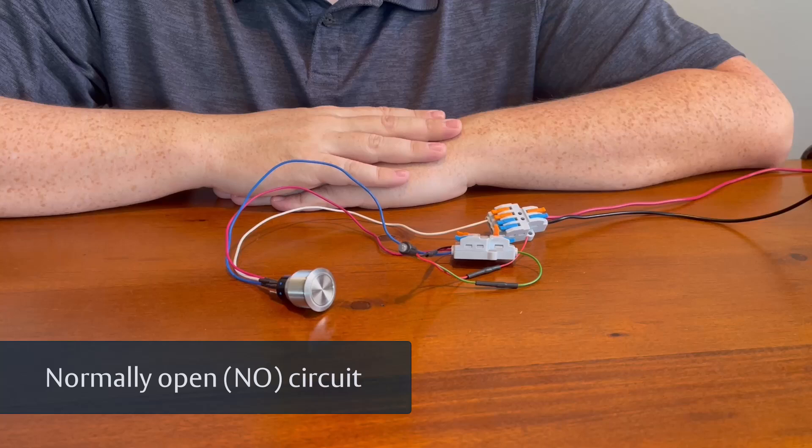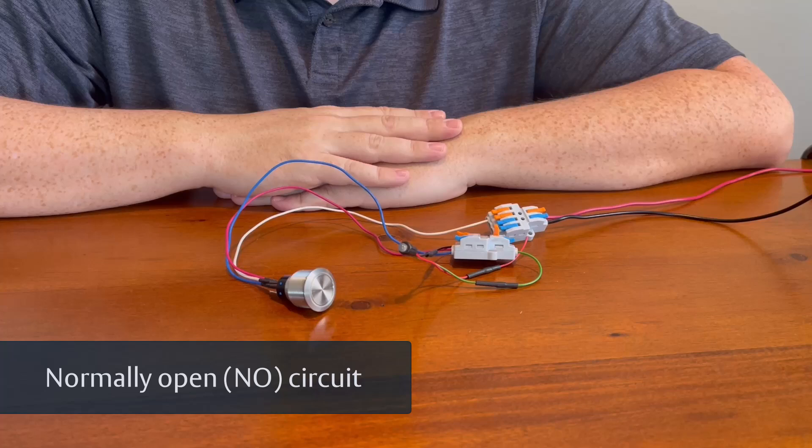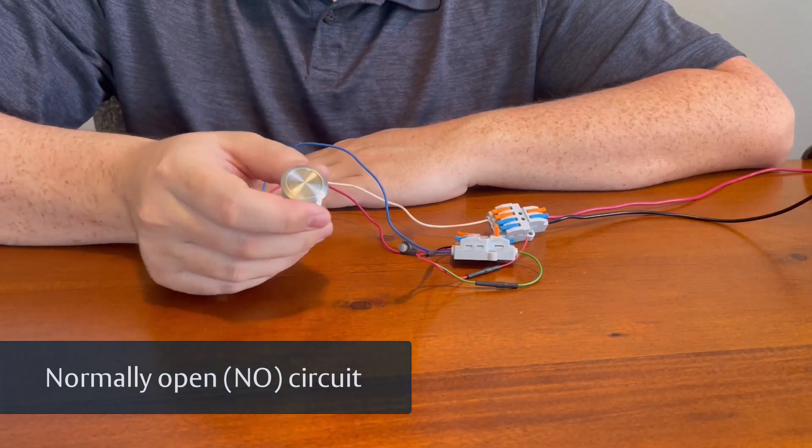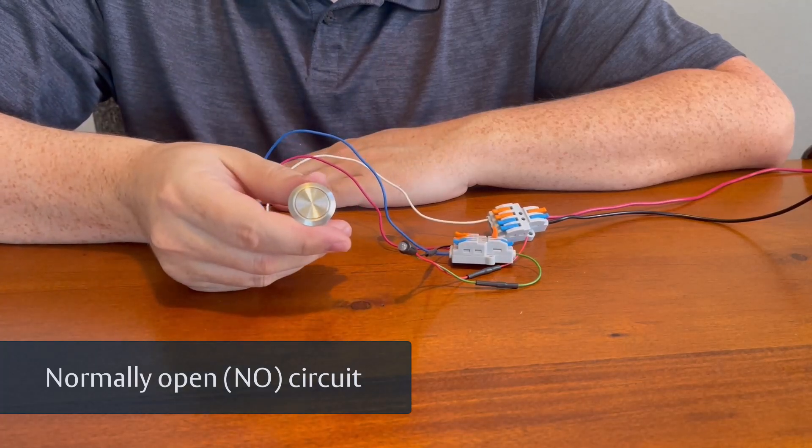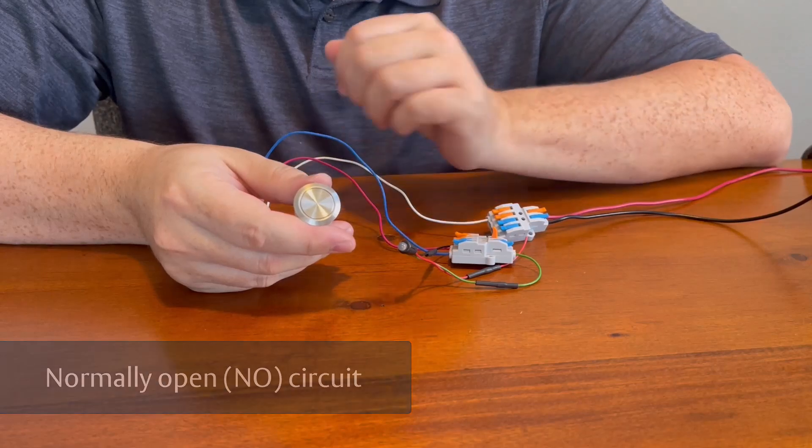Let's start with normally open circuits. A normally open or NO circuit is one where the switch is in the off position when it's at rest. In other words, the electrical path is broken, or open, and no current flows through the circuit.